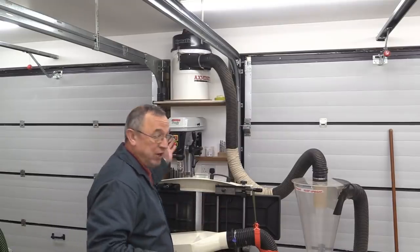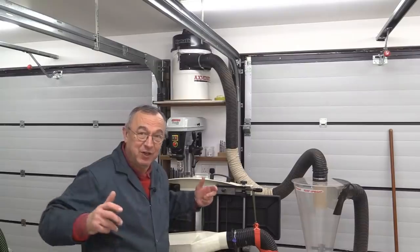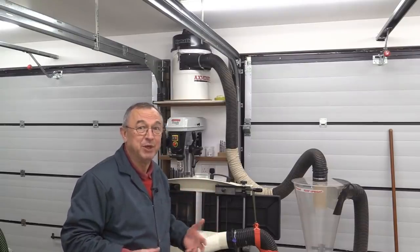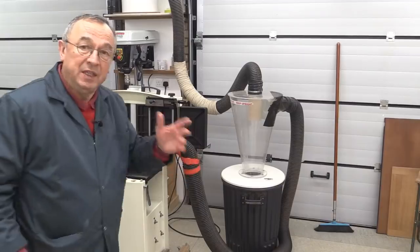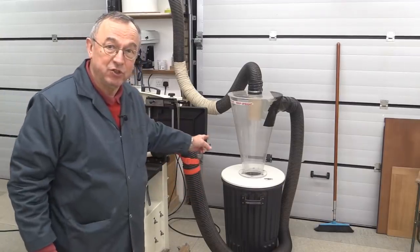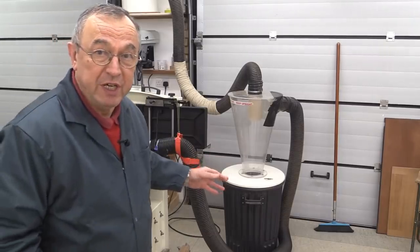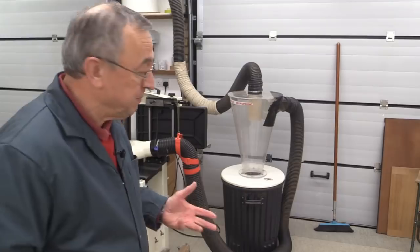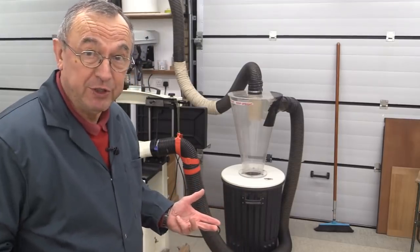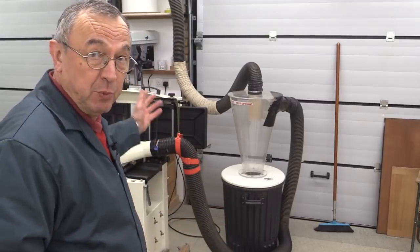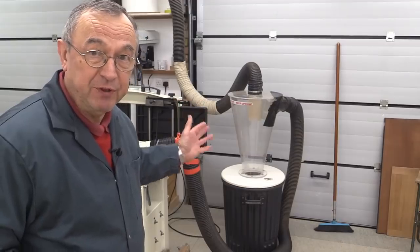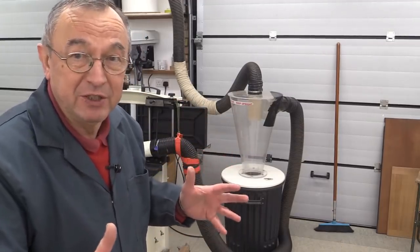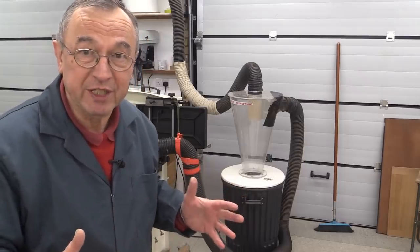Technically, the extractor hasn't got enough throughput of air to handle the planing machine, but it does a good enough job for me. Now, the key thing is the cyclone. The reason it's so important is that something like a planing machine will produce a lot of chippings in a very short period of time. So a small extractor like the NVD 750 just hasn't got the capacity in its drum to take a sensible quantity of chippings.